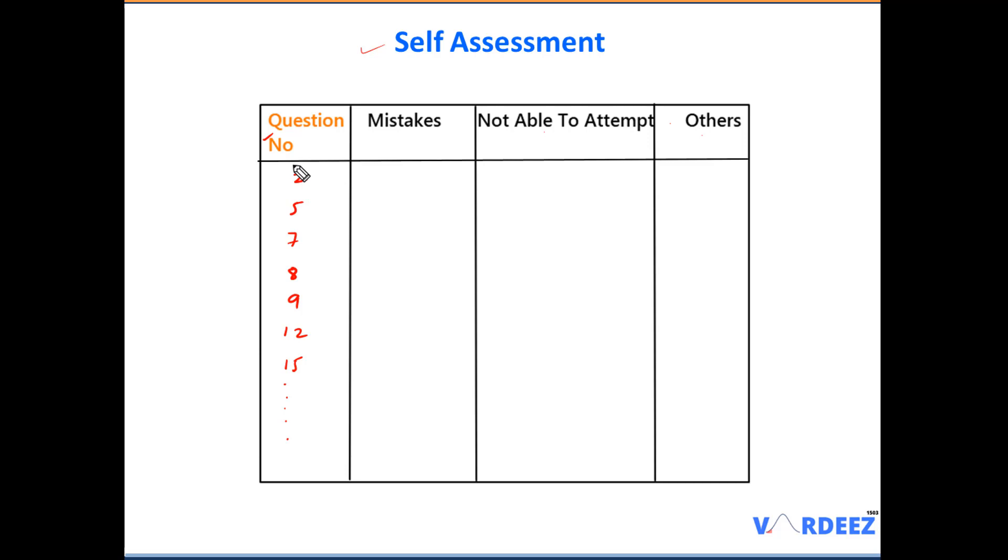Now what I'm going to do is let's say I look at question number two, I will categorize whether it was a silly mistake, I was not able to attempt or anything else. So let's say question number two, it was a silly mistake from my side. So I will go ahead and I'll place a tick right here. Then question number five, I was not able to attempt because time was running out and hence I just had to take a guess and I moved on. Seventh question again, I was not able to attempt, time was running out. Eighth question again was a silly mistake. Ninth question again was a mistake. I was in a hurry and I marked the wrong answer choice. Twelfth question is something I had no clue about that particular subject and that's why I place in others. Fifteenth question again, it was a mistake. So now I will repeat this process for all the wrong questions that I have in these question numbers.